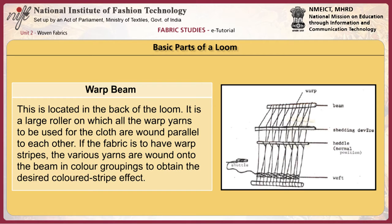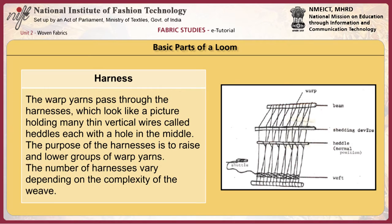If the fabric is to have warp stripes, the various yarns are wound onto the beam in colour groupings to obtain the desired coloured stripe effect. The warp yarns pass through the harnesses, which look like a picture frame holding many thin vertical wires called heddles, each with a hole in the middle. The purpose of the harness is to raise and lower groups of warp yarns. The number of harnesses varies depending on the complexity of the weave.